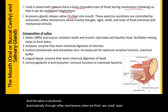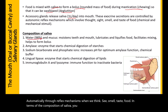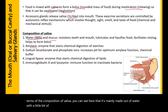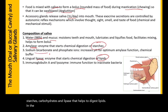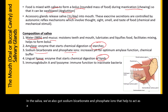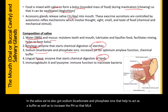In terms of the composition of saliva, it's mainly made of water with a little bit of mucus. We've got two enzymes: amylase that digests starches and carbohydrates, and lipase that helps to digest lipids. Saliva also contains sodium bicarbonate and phosphate ions that help to act as a buffer and increase the pH so that amylase can work effectively.